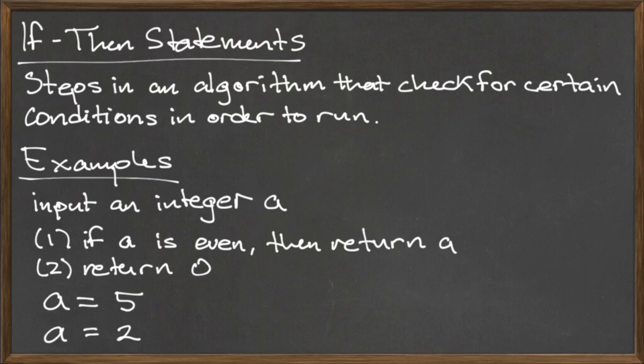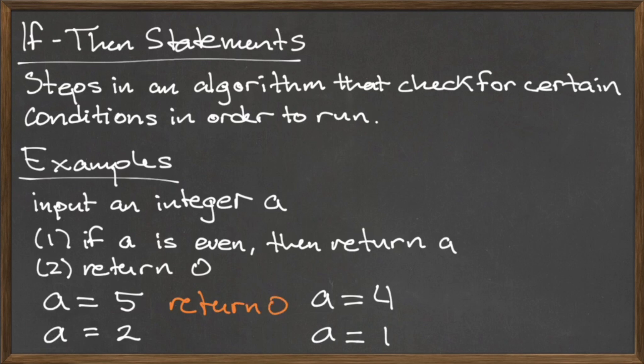Let's run this algorithm with the input a equals five. The first step in our algorithm checks to see if a is even. Five is not even, so the conditional statement 'a is even' is false, so the instructions to return a are not followed and are instead skipped. We move on to step two of our algorithm, which is to return zero. So for the input a equals five, the output is zero.